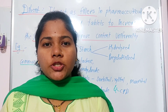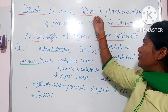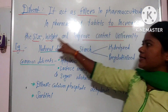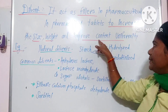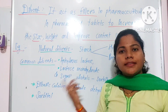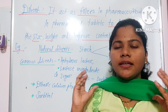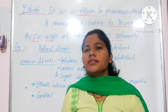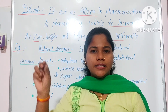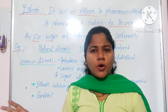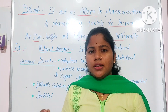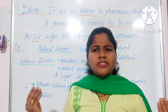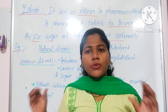What are the diluents in pharmaceutical preparations? Diluents act as fillers in pharmaceutical tablets to increase the size, weight, and improve content uniformity. These fillers are used because the dose of the drug inside the tablet is very small — in milligrams, like 0.1 mg, 0.5 mg, 100 mg, or 500 mg.